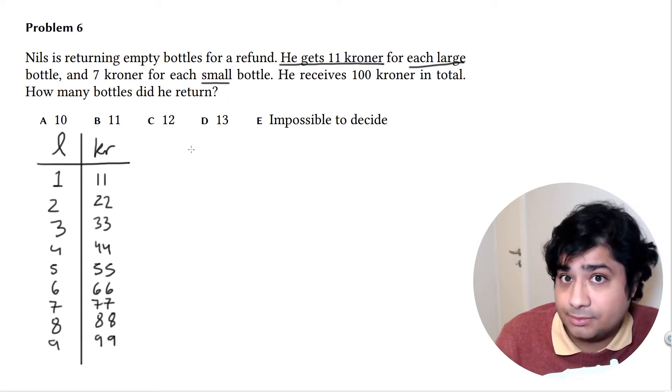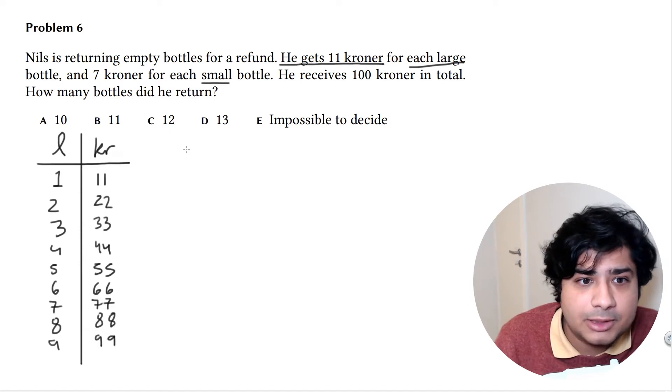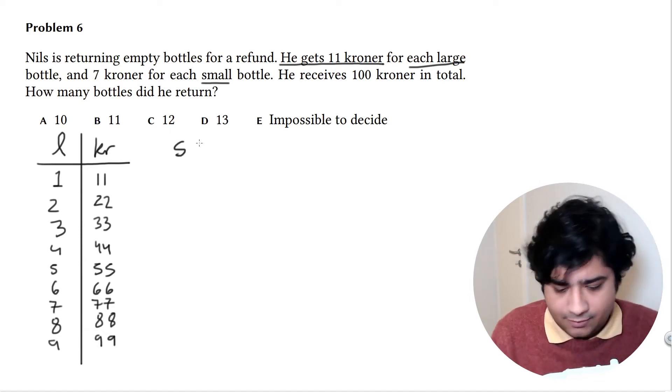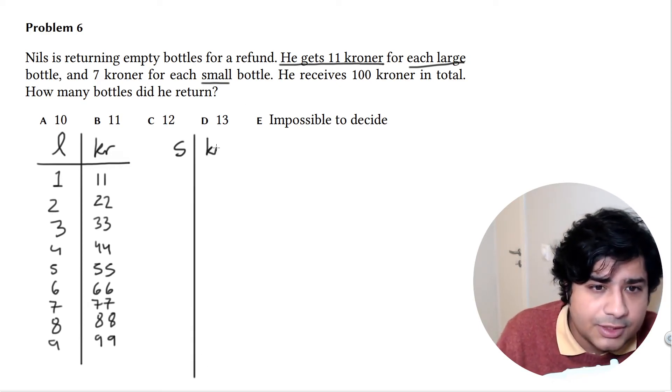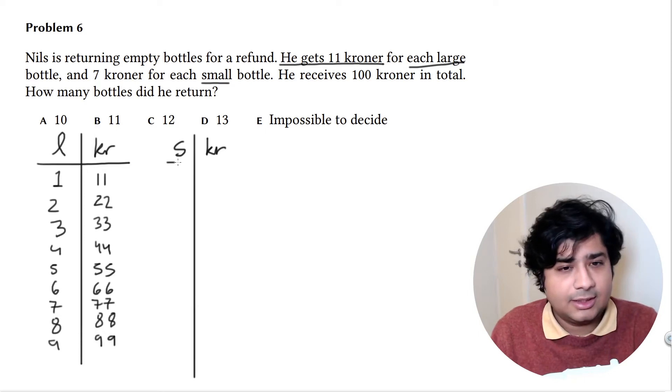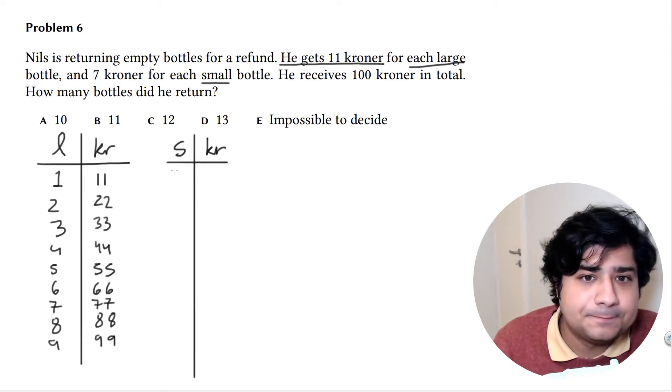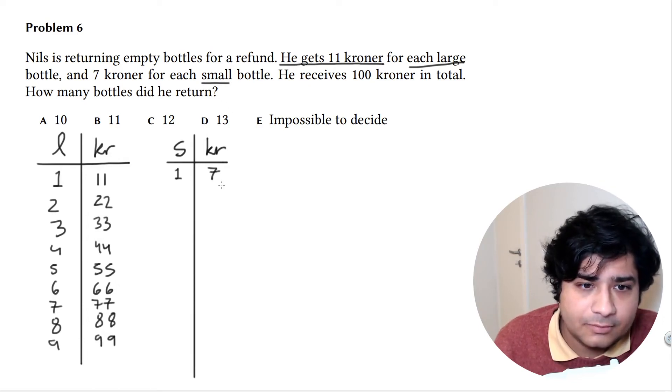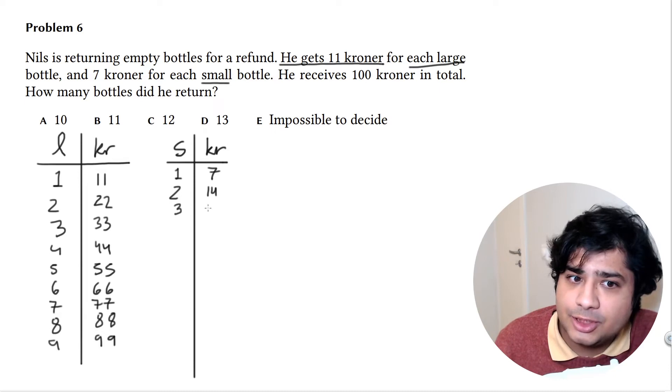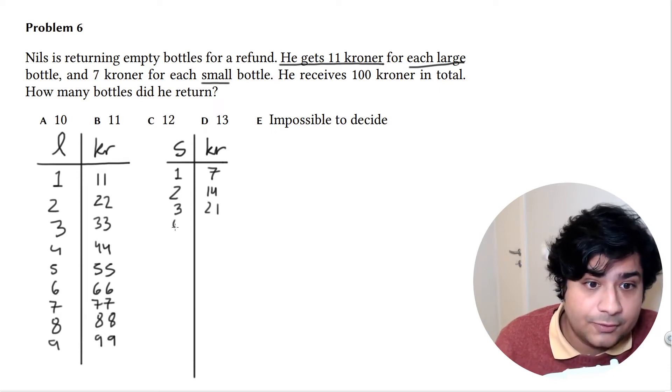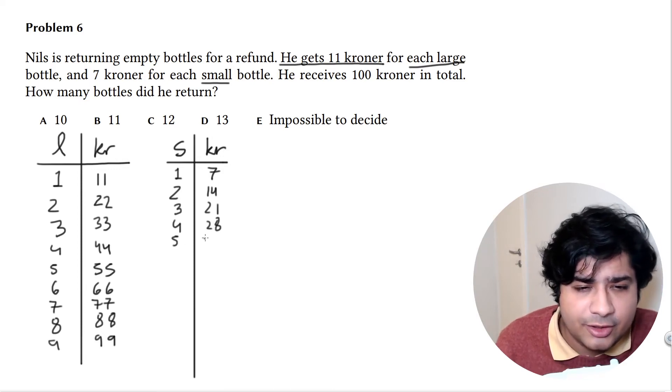Let's do the same thing for the small bottles. For one it's 7. This might be a little tougher. For two it's 14, three is 21, four is 28, five is 35.